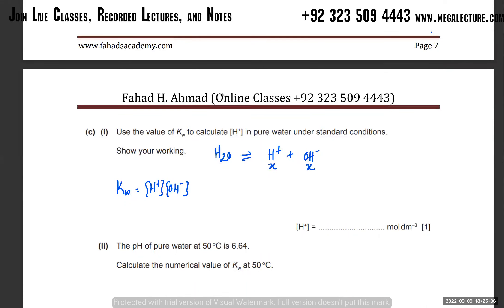In pure water, the amounts of H⁺ and OH⁻ produced are exactly the same. So Kw = x × x = x². We know Kw = 1 × 10⁻¹⁴ mol² dm⁻⁶ under standard conditions.